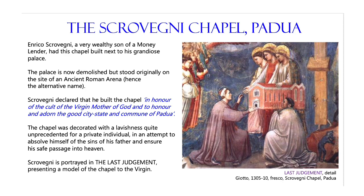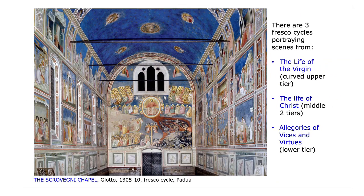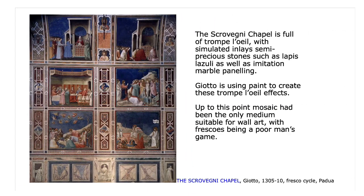Frescoes were very difficult to do, but look at this chapel. The upper tier shows the life of the Virgin — made more difficult because it's curved. The middle two main tiers are scenes from the life of Christ, and below that are allegories of vices and virtues, handily at a spectator's level, just to remind us of how great or not we are. In between there's all sorts of trompe l'oeil decoration. The Lamentation is placed in the bottom left, below other scenes from the life of Christ and above the life of the Virgin.